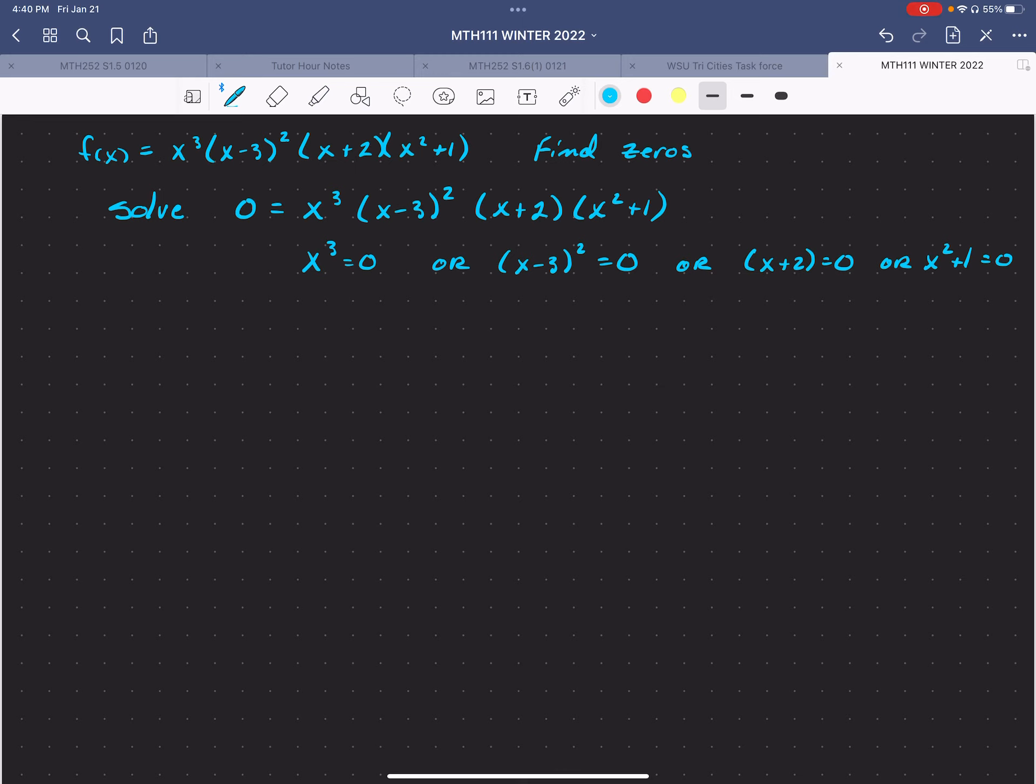Okay, so each of these gives me a number. So the solution to that one is x equals 0. Now, x minus 3 squared equals 0 when x equals 3. x plus 2 equals 0 when x equals negative 2. And x squared plus 1, there is no real solution to that. So we're going to ignore that one for now. So each of these gives us a 0. My 0s are 0, 3, and negative 2. And those are also my x-intercepts.